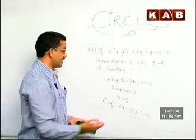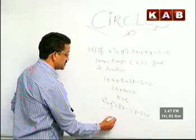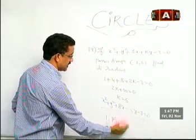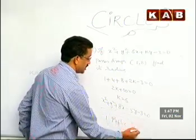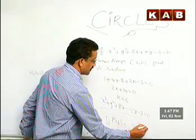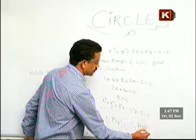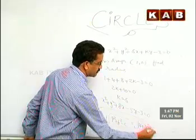Now, it's easy to find radius. Radius is √(g² + f² - c). What is your g? It is 4. What is your f? It is -5/2, so 25/4. Minus of minus 3 plus 3.